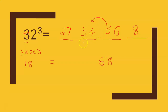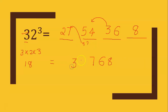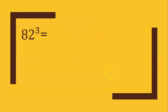So 54 plus 3 is 57. The ones place is 7; the carry 5 goes to 27 plus 5, which is 32. So the answer is 32,768.